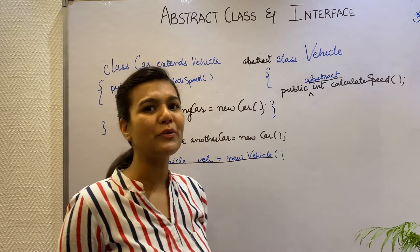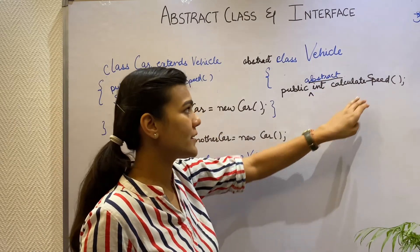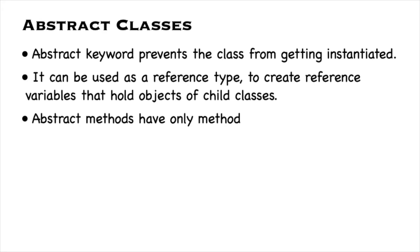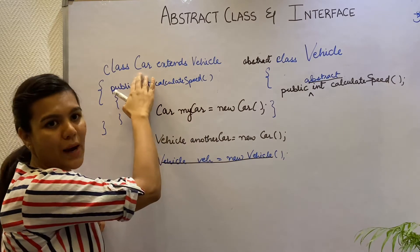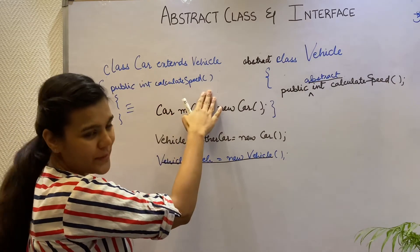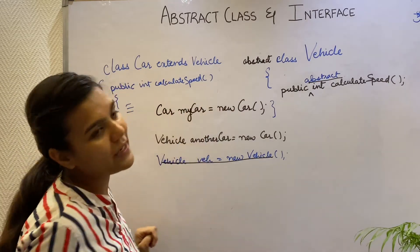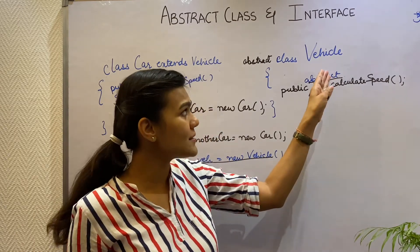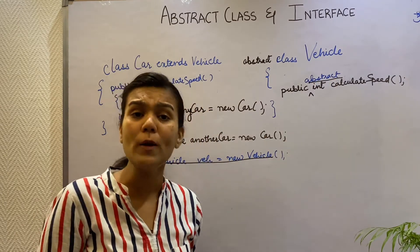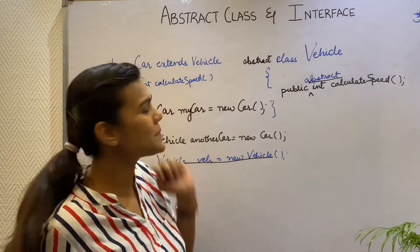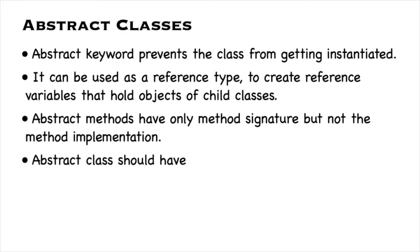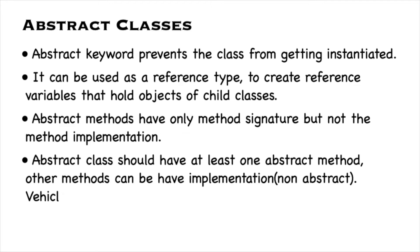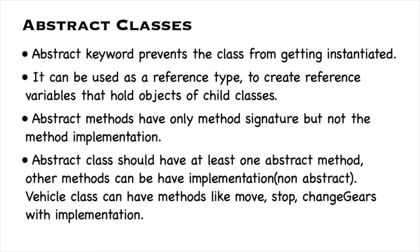There's also one more thing to notice that I have created the calculate speed method as an abstract method. So there's no implementation to the calculate speed method here. But my Car class will provide the implementation of the calculate speed method. Also if there are other classes like Scooter and Truck extending my Vehicle class, then they will be providing their own implementation of the calculate speed method. If you add even one abstract method in a class, then you have to make that class as an abstract class.